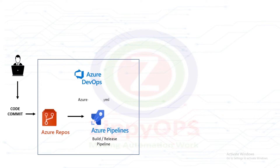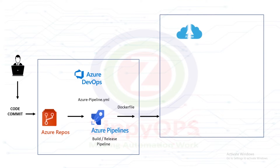In the next stage, the Azure pipeline creates a Docker image with Java application code artifacts, tags the image, and pushes it to Azure Container Registry.